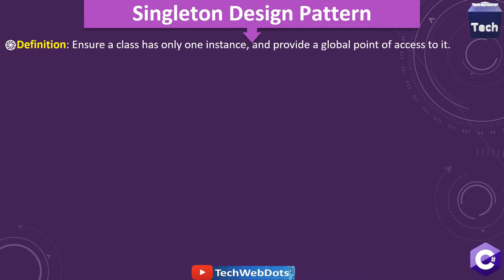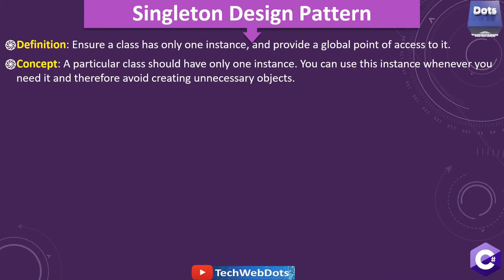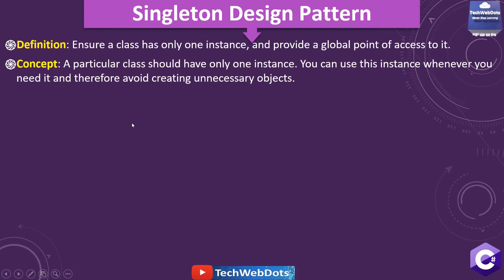According to the definition, Singleton ensures a class has only one instance and provides a global point of access to it. This is a very important line — we ensure a class has only one instance and provide a global point of access to it. According to the concept, a particular class should have only one instance, and you can use this instance whenever you need it, thereby avoiding creating unnecessary objects.